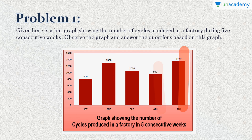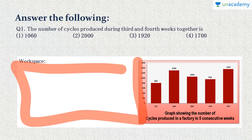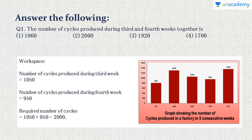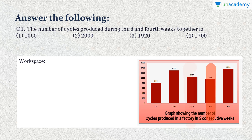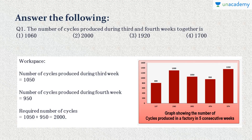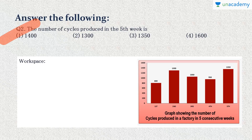Question 1: The number of cycles produced during the third and fourth weeks together. We add the cycles for Week 3 (1050) and Week 4 (950): 1050 + 950 = 2000. Option 2 is the correct answer. Question 2: The number of cycles produced in the fifth week — from the graph, Week 5 has 1350 cycles, which is option 3.